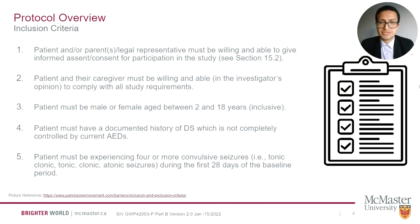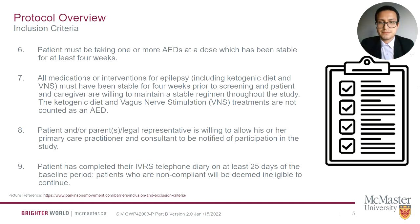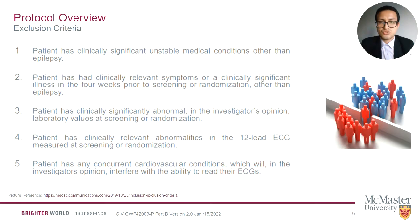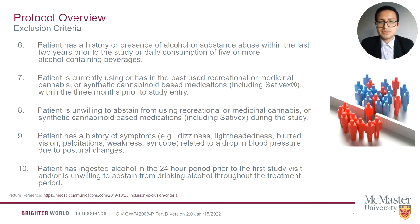Here is the complete inclusion criteria list as per protocol section 6. Regarding exclusion criteria, participants may not enter the study if they have an abnormal clinical condition, laboratory values, or EKG results, history of alcohol or drug abuse, current or past use of cannabis, allergy related to any study drug components, or type 4 or 5 on the Columbia Suicide Severity Rating Scale. Here is the complete exclusion criteria list as per protocol section 6.